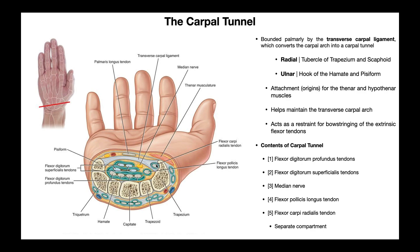The transverse carpal ligament also helps to maintain the transverse carpal arch — we'll talk about hand arches in later videos. And it acts as a restraint for bowstringing of the flexor tendons. Within this carpal tunnel we have many flexor tendons, and by having this ligament go over them, it prevents them from bulging out whenever we go into wrist flexion.